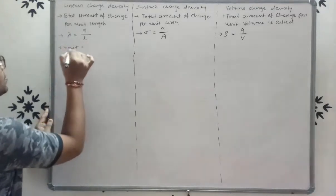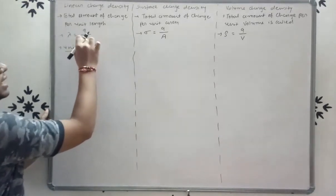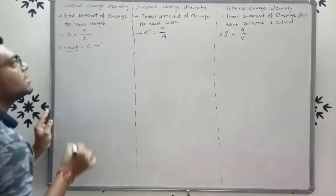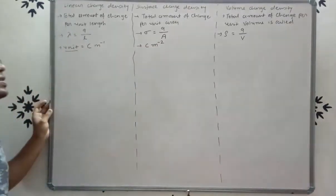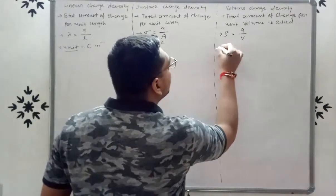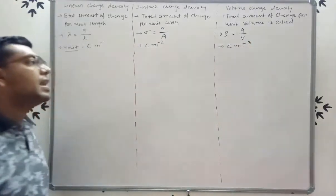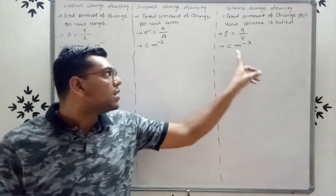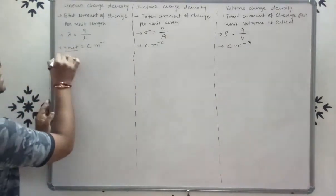Now for units: the unit of charge is coulomb and the unit of length is meter, so the unit of linear charge density is coulomb per meter, or C·m⁻¹. The unit of surface charge density is coulomb per meter squared, C·m⁻². The unit of volume charge density is coulomb per meter cubed, C·m⁻³.